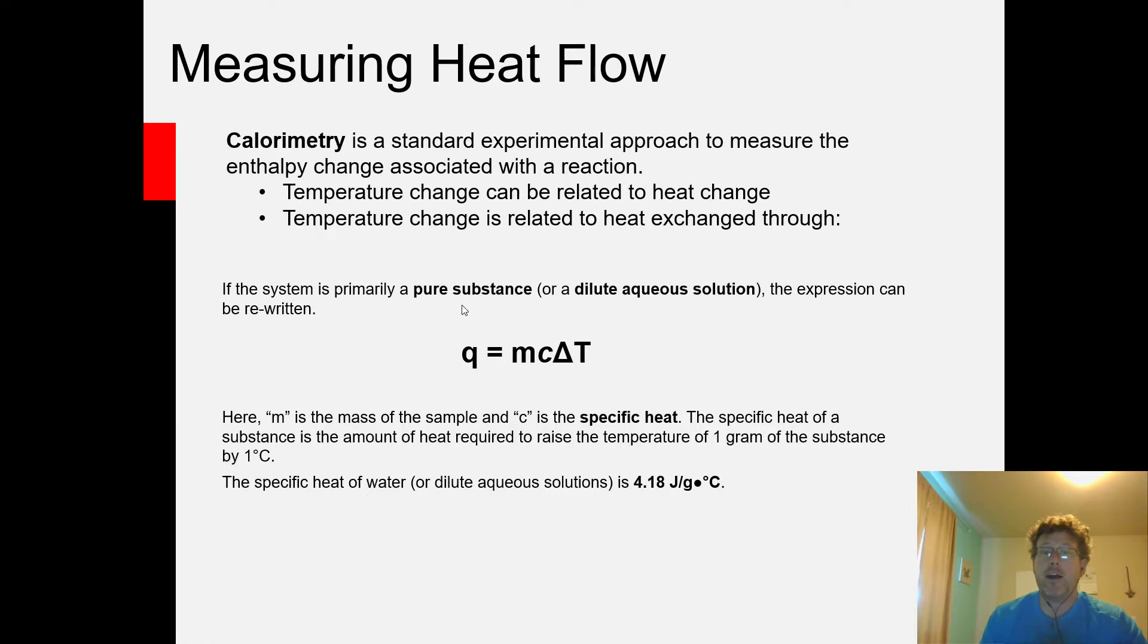That's really how all basic laboratory calorimetry experiments are carried out. We'll know the mass of what's in the calorimeter, we can figure out its specific heat, what we're actually measuring is the temperature change using the thermometer, and from that we can calculate the heat flow.